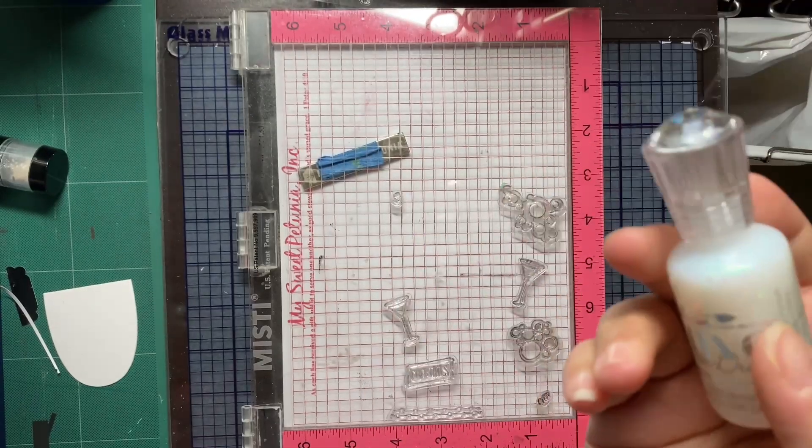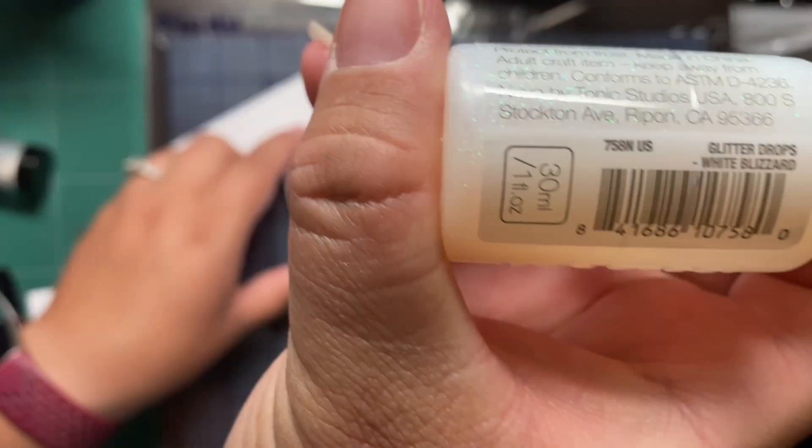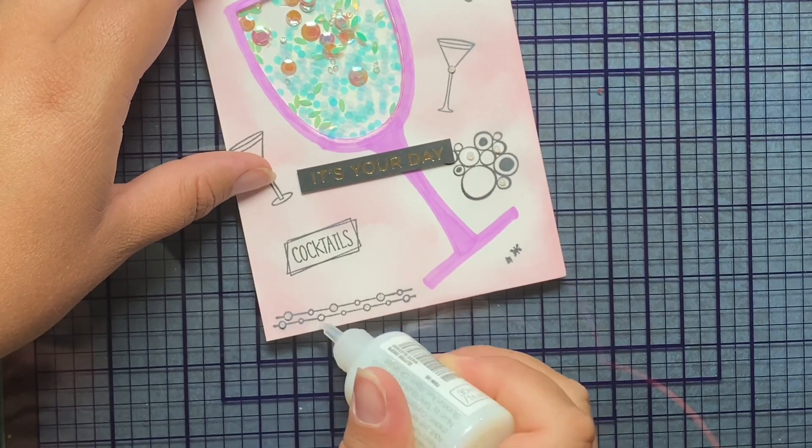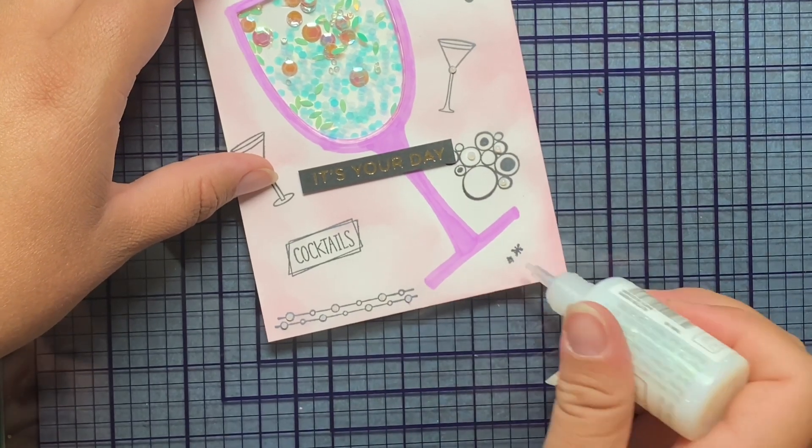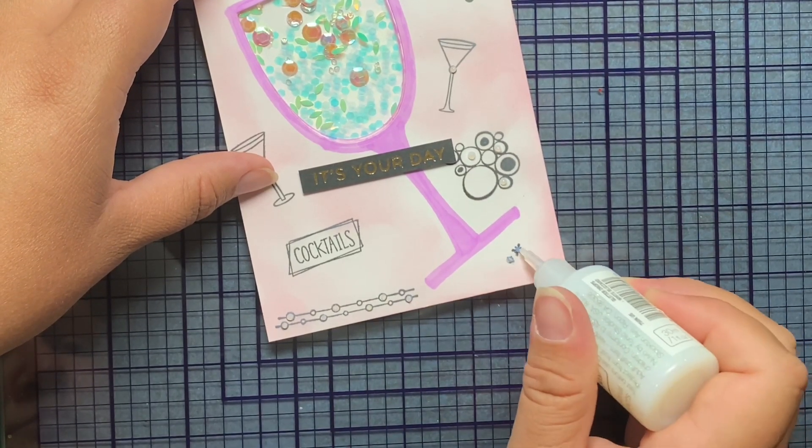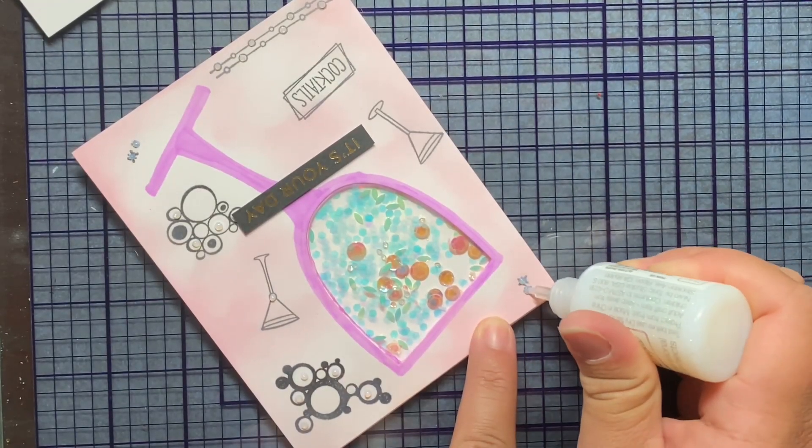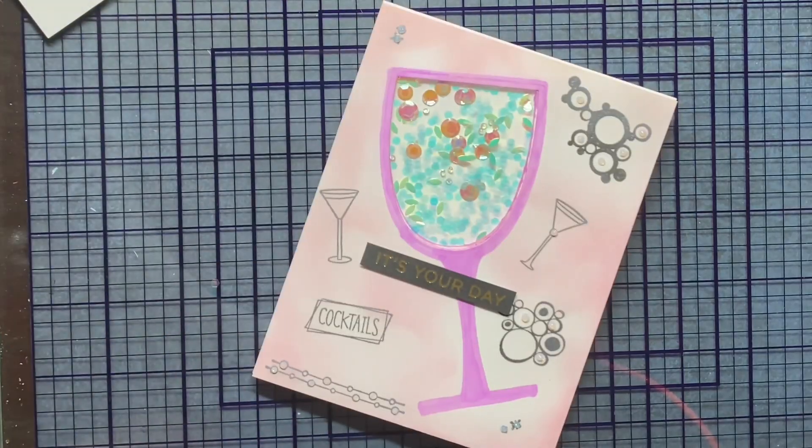I'm going to put some Nuvo drops. These are Blizzard... Oh, Winter Blizzard on there. We're going to just make it a little textury, I guess, or whatever. We're just going to put some dots here and there on some of the stamps that I've put on. I have no, you know, reason behind my...